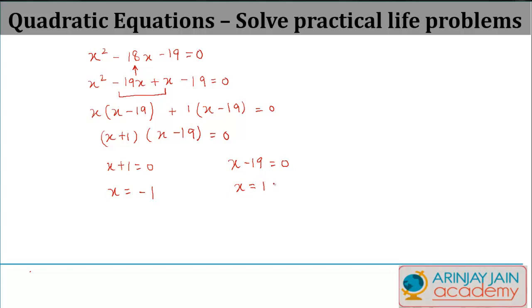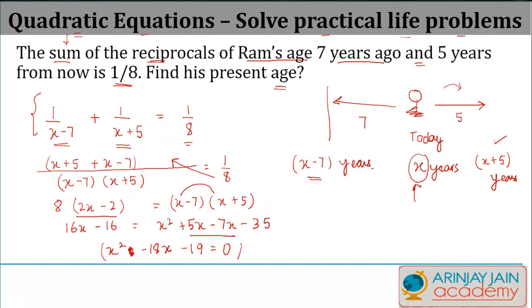Now since X is the age of a person, it cannot be negative, so therefore X minus 1 doesn't stand. And the age of X is actually 19, so the present age of Ram is equal to 19 years.